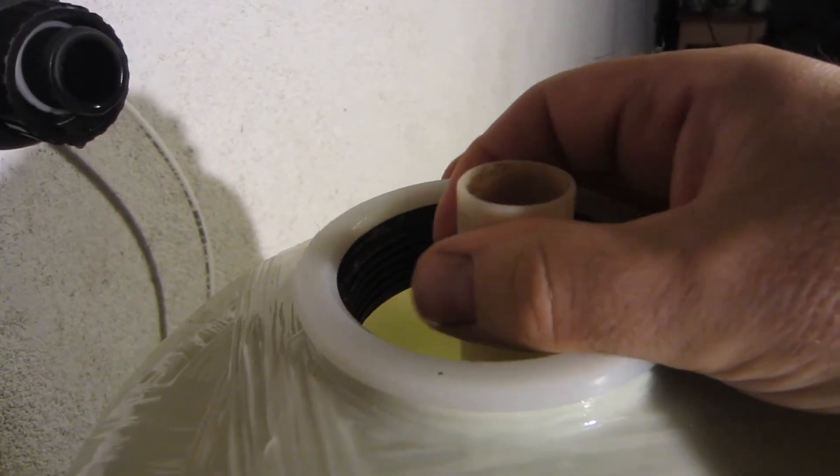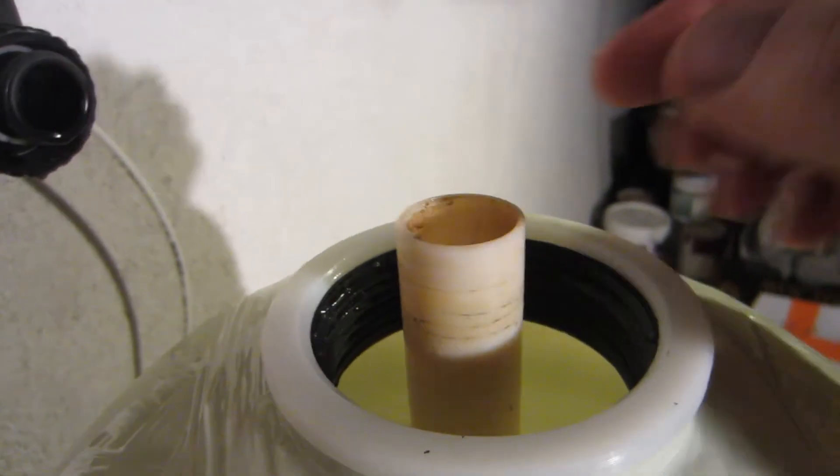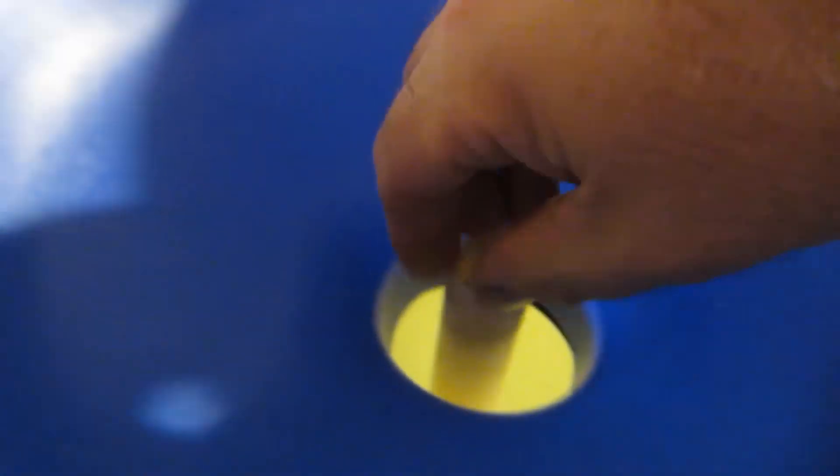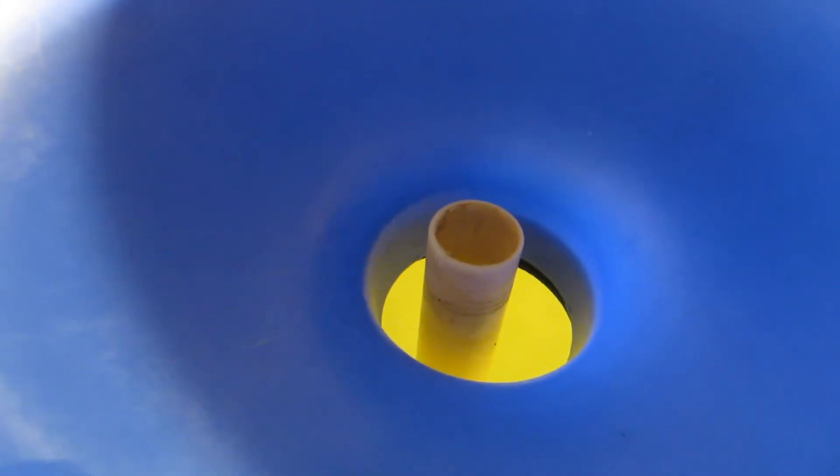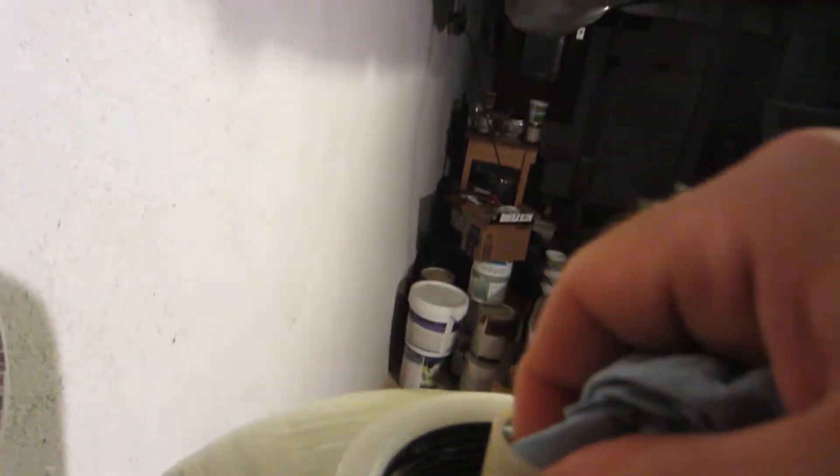So this pipe feels like it has like some Vaseline or something on it. I'm going to clean it off a little bit and then I'm going to plug it up so that when I put the funnel in there, I can plug this up and then I won't have to worry about getting any of the calcite into that pipe. Okay, I just took a paper towel and kind of wiped that off a little bit.